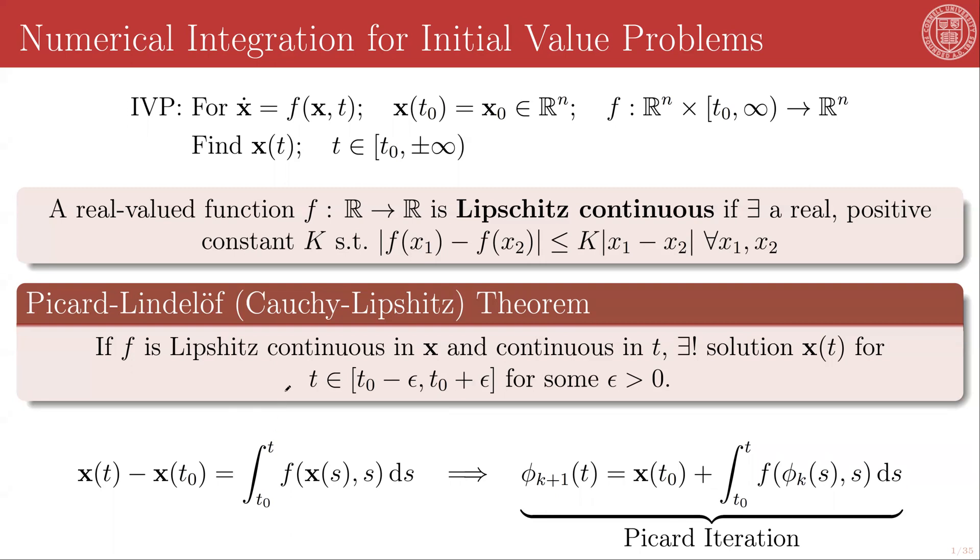The sketch of the proof of this is as follows. We integrate the original differential equation, and we can write x(t) - x(t₀) = ∫[t₀ to t] f(x(s), s) ds. Here we replace time with this dummy variable s and we are integrating over s. The true solution, which we will call φ(t), can be approximated iteratively via a process known as Picard iteration. So in this process, we take iterants of φ, φₖ evaluated at a time t, and the (k+1)th iterant is going to be given by the initial conditions x₀ plus the integral from t₀ to t of our function f evaluated at the previous iterant φₖ(s) and s over ds.